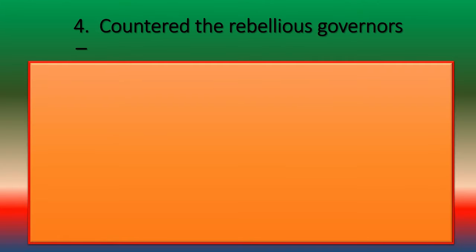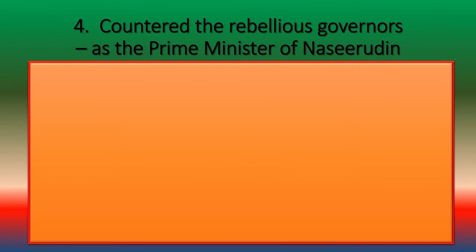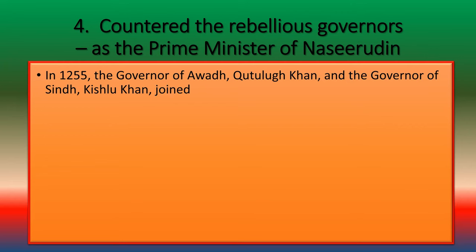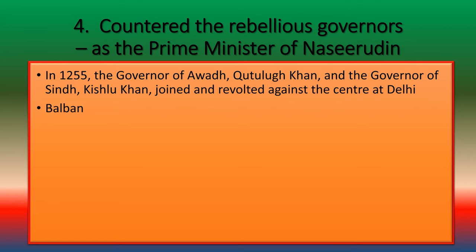In 1255, the governor of Abad, Kudluk Khan, and the governor of Sind, Kishlu Khan, joined together and revolted against the center at Delhi. Balban suppressed their revolt with an iron fist.